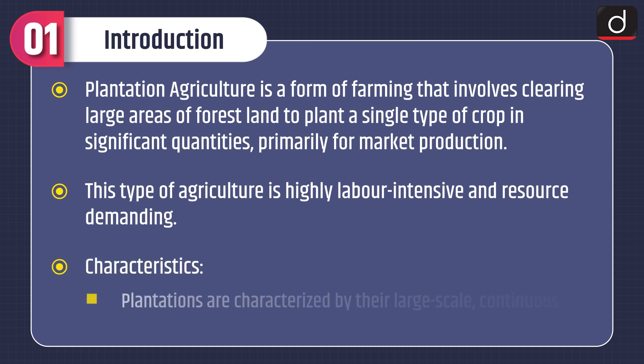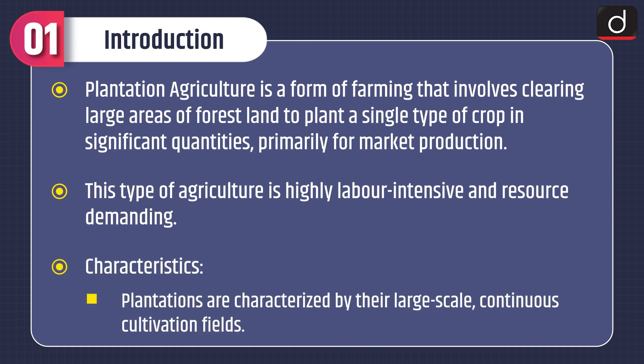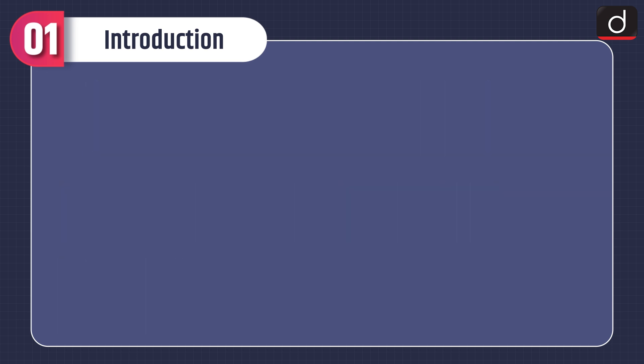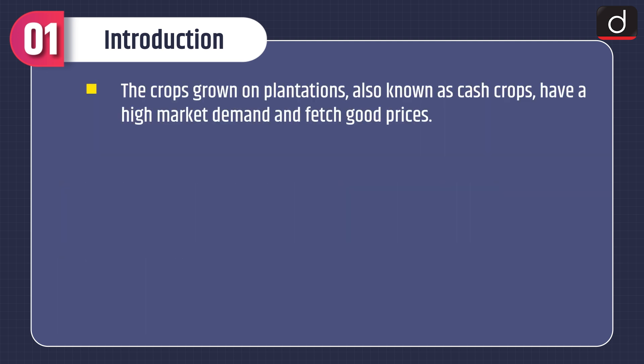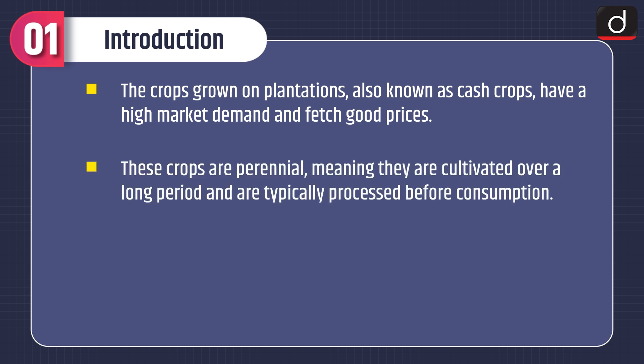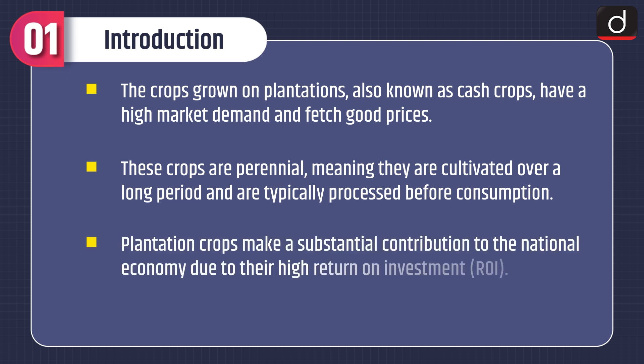Characteristics: Plantations are characterized by their large-scale continuous cultivation fields. The crops grown on plantations, also known as cash crops, have high market demand and fetch good prices. These crops are perennial, meaning they are cultivated over a long period and are typically processed before consumption. Plantation crops make a substantial contribution to the national economy due to their higher return on investment.